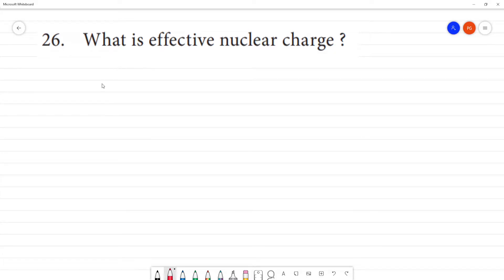What is effective nuclear charge? Effective nuclear charge, the net nuclear charge experienced by valence electron, by valence electron in the outermost shell.